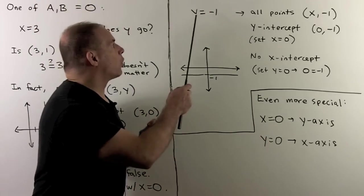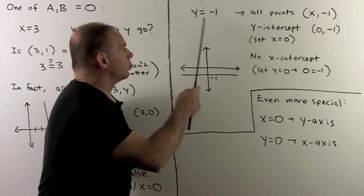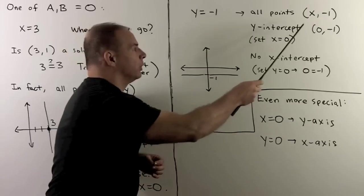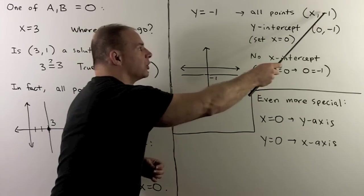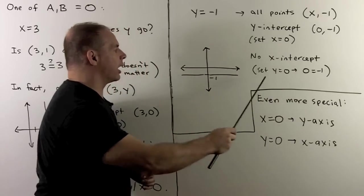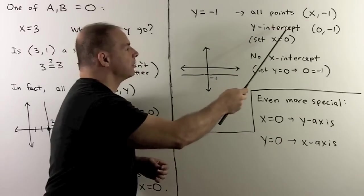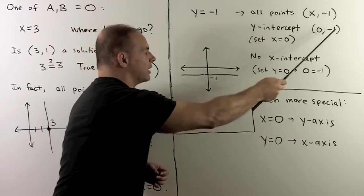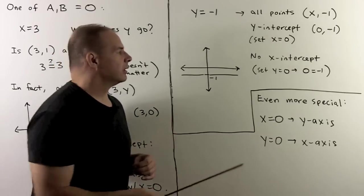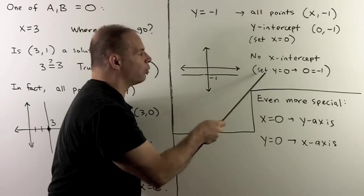Similarly, y equals -1 yields all solutions of the form (x, -1), where x can be any real number. This is a horizontal line. The y-intercept is (0, -1). There is no x-intercept because setting y equal to 0 gives a false statement — we can never have y equal to 0 on this line.